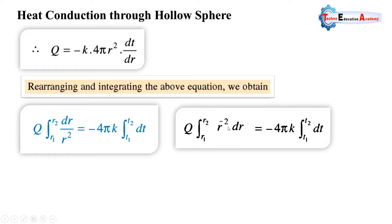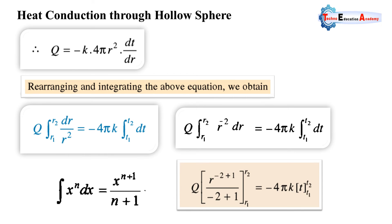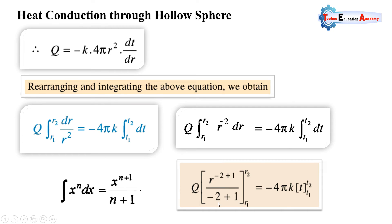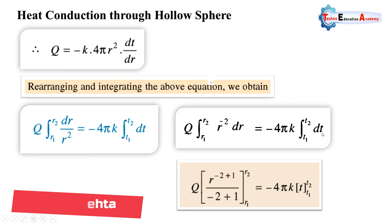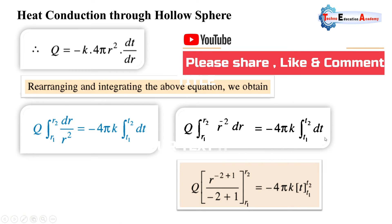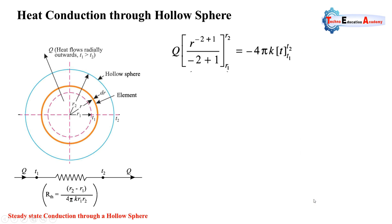According to the rule of integration, ∫x^n dx = x^(n+1)/(n+1). So the integral of r^(−2) is r^(−2+1)/(−2+1) = r^(−1)/(−1), with the upper limit r2 and lower limit r1. On the right-hand side, 4πk is constant and the integral of dT cancels with the differential, leaving the temperature evaluated between limits T1 and T2.